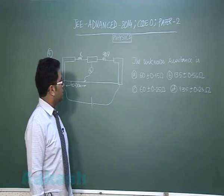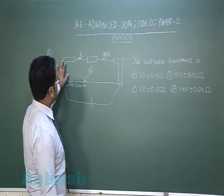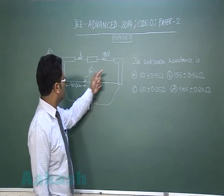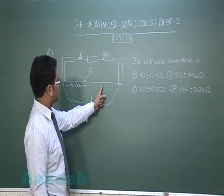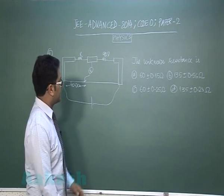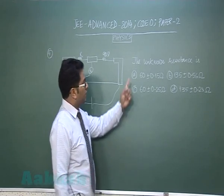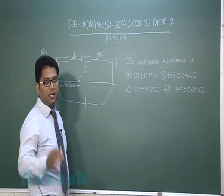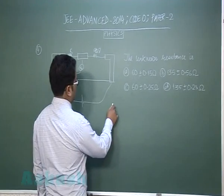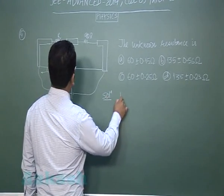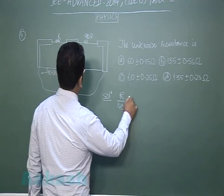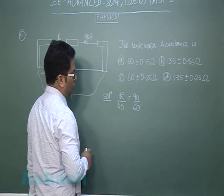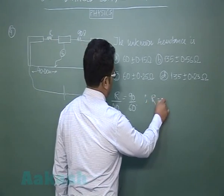Question four is from the meter bridge. You can see the standard figure: the unknown resistance on one side, the standard resistance is 90 ohms, and the balance length is 40.0 cm, meaning the other length is 60 cm since it's a meter bridge. We need to calculate the unknown resistance with its error limit. From the balance condition: R/40 = 90/60, which gives R = 60 ohms.